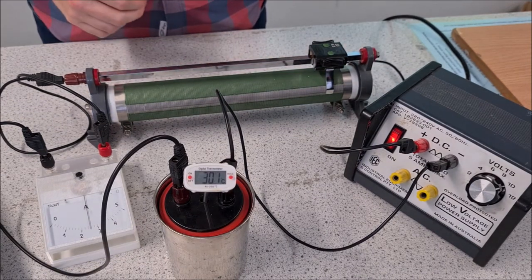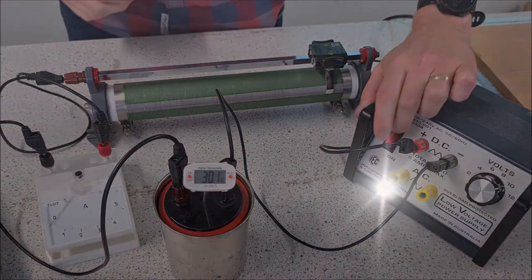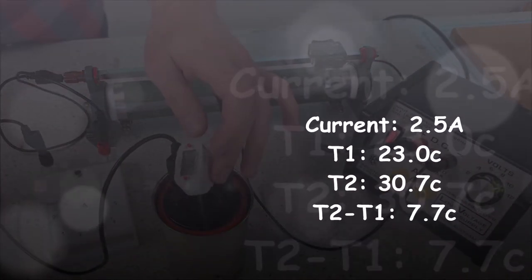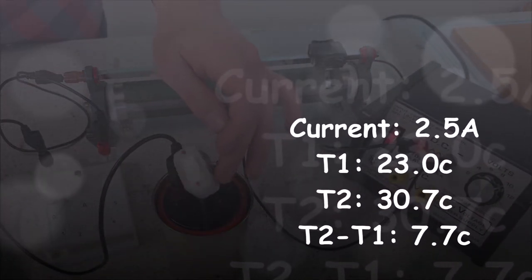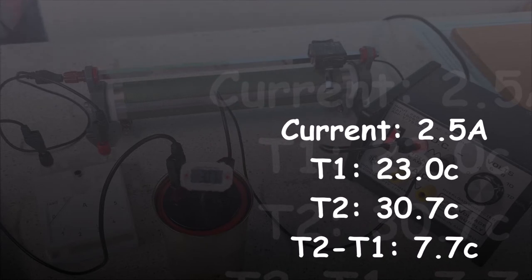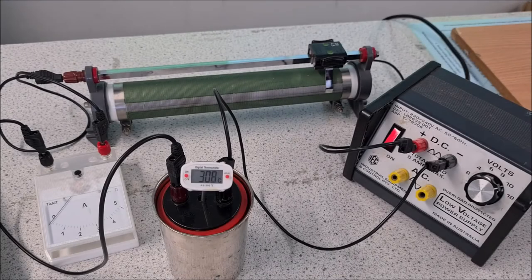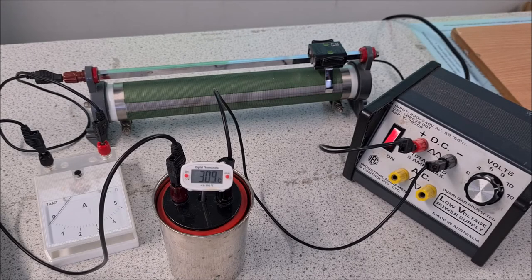Okay, so that's five minutes. We're going to turn off the power then, and our end temperature for this one is 30.7 degrees. So that's an increase of 7.7 degrees for 2.5 amps.